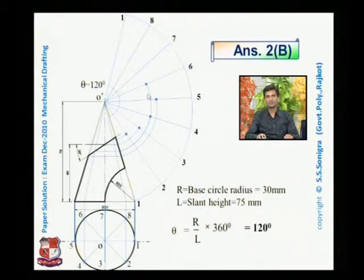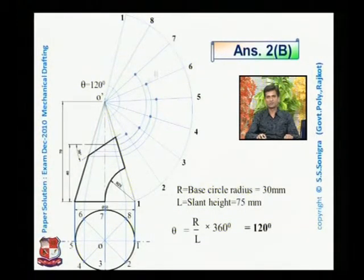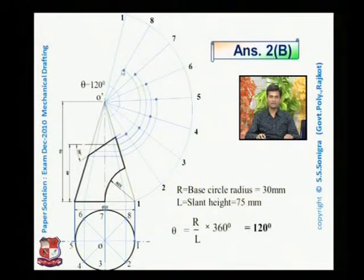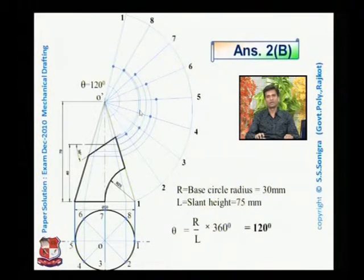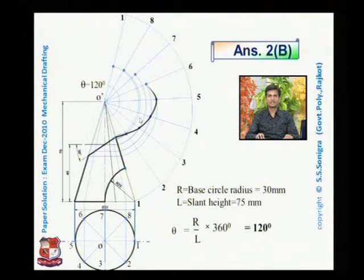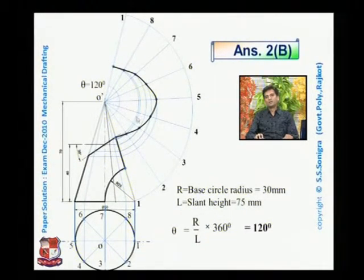Similarly, point 7 would be here — transfer it from here to here like this. Point number P7 on O7 generator, and from here on 8: draw a line and draw an arc that will cut O8 at this point. Similarly, draw an arc that will cut O1 at this point. So these are all the points located in the developed portion of this cone from the upper cut. Now join all these points with a smooth curve, because this is a cone and the developed portion appears as a smooth curve. So we have drawn this upper cut portion.